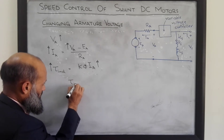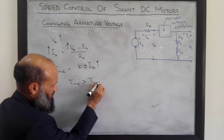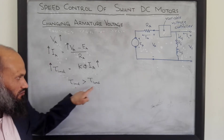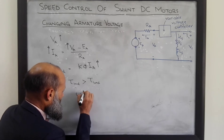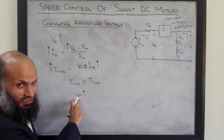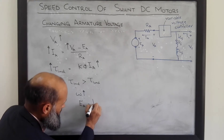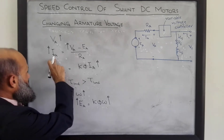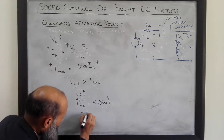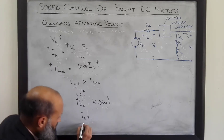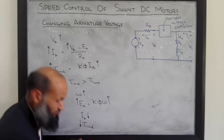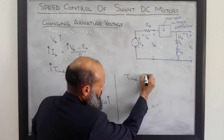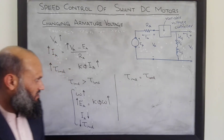As induced torque becomes larger than the load torque — the torque applied by the mechanical load connected to the motor — the motor will gain speed. Due to the increase in speed, Ea = Kφ·ω will also increase, which in turn decreases the current, and the decrease in current leads to a decrease in induced torque. This transient effect continues until induced torque again equals load torque and the motor runs at a new steady-state velocity.